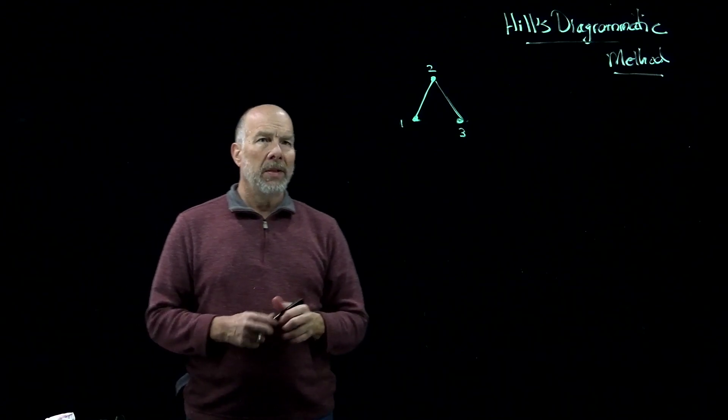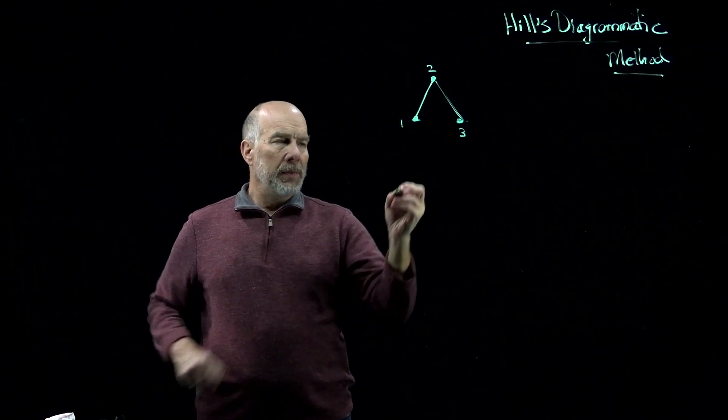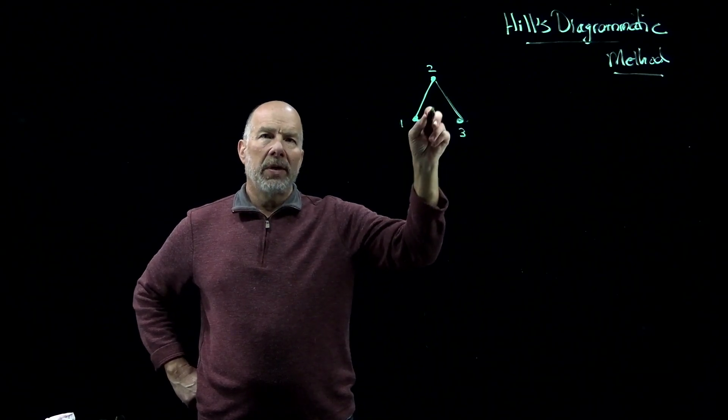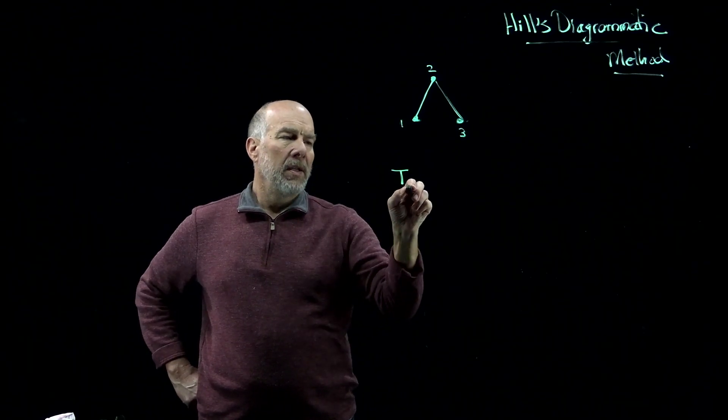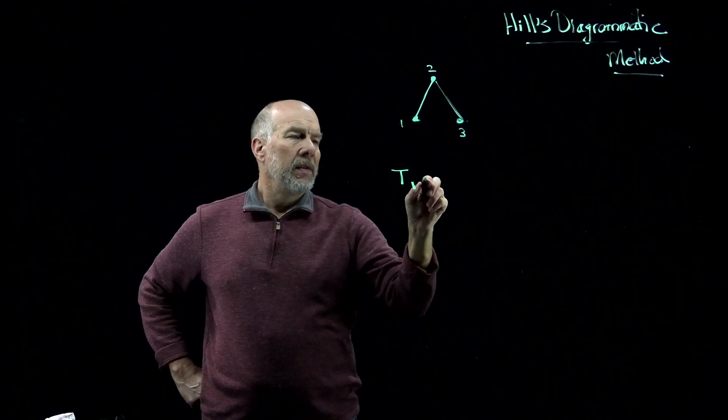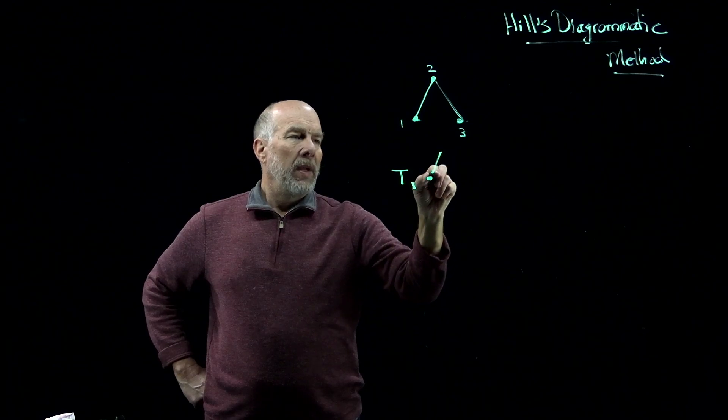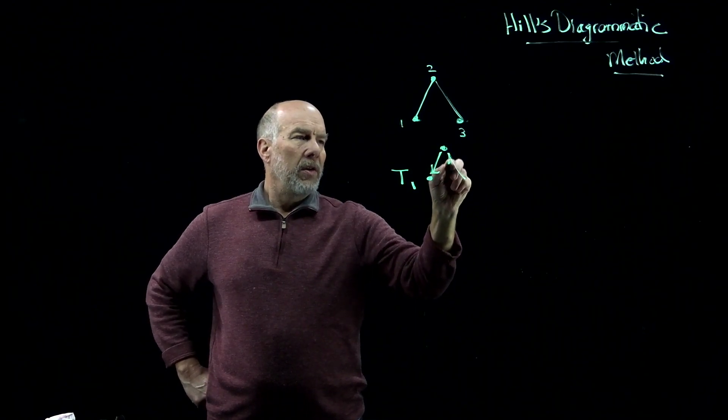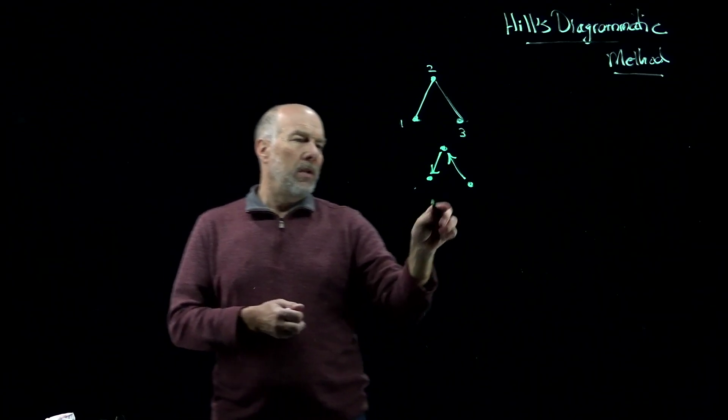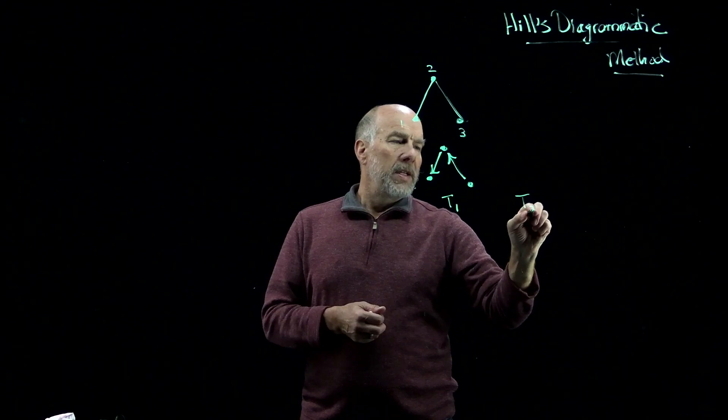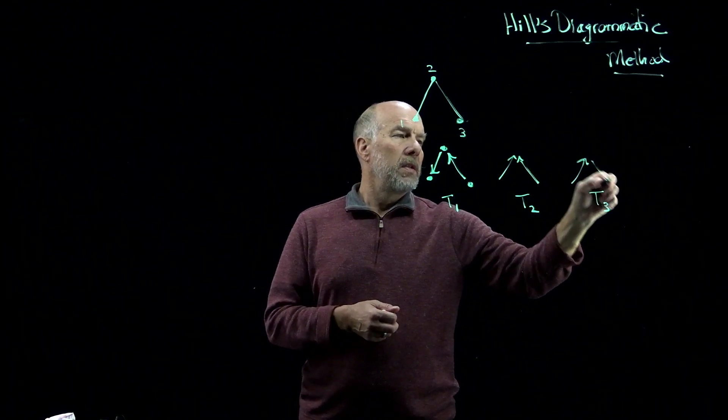So now, the way Hill's diagrammatic method works is that we're looking for a probability of being in state one, state two, and state three at steady-state. And so what we'll do is just think of the spanning tree of this graph rooted in each of those three states. So the spanning tree, I'll call it capital T, associated with the state I, the rooted spanning tree, the spanning tree associated with the state one, has an arrow going this way. So this is the, this tree I would call T1, and then we can write down T2 and T3 very quickly. So T2 would have this structure, and T3 would look like this.